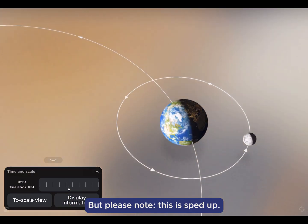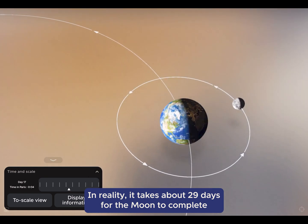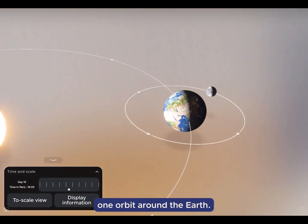Please note, in reality, it takes about 29 days for the Moon to complete one orbit around the Earth.